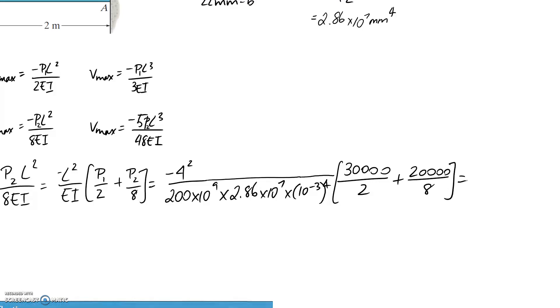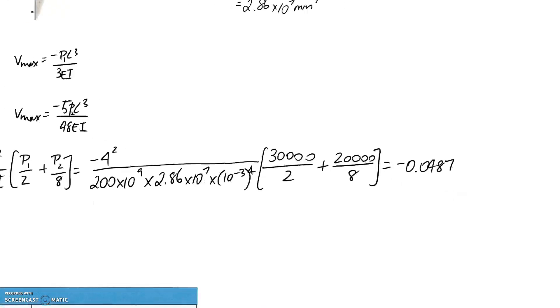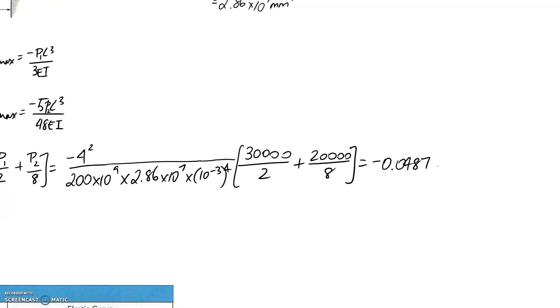If you type all this in, you end up with an answer which comes out to negative 0.0487, and the units of it, since we converted everything back to base units, it's going to be in radians because that's the base unit for angle.